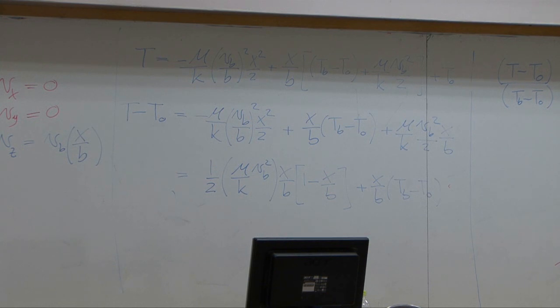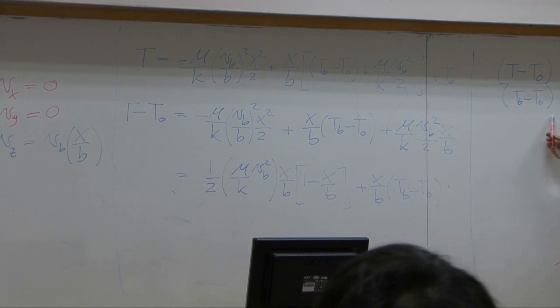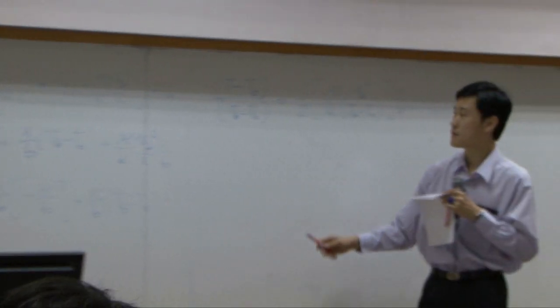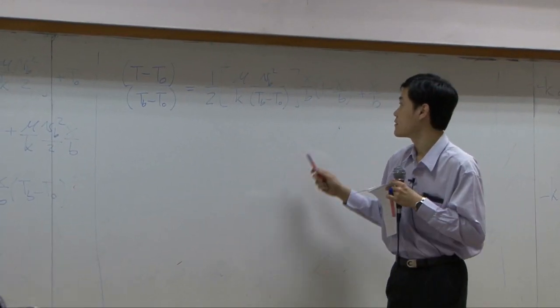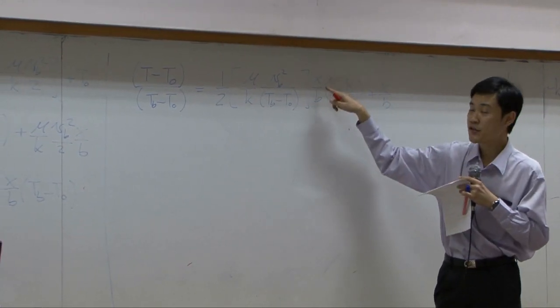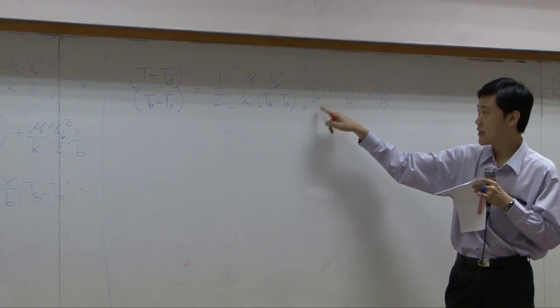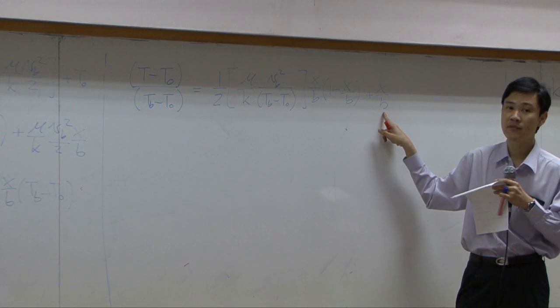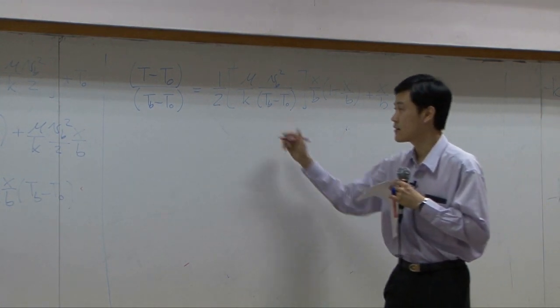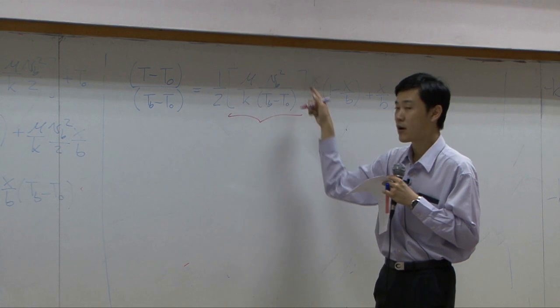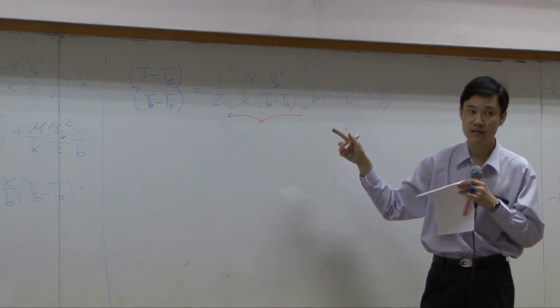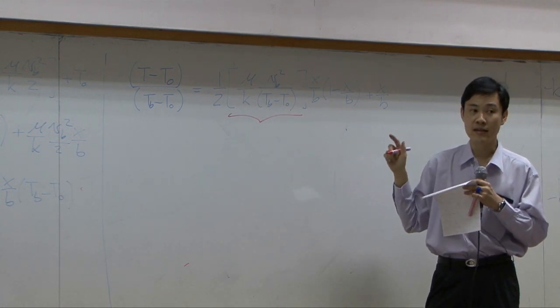Alright, now the term on the left has no unit, it is dimensionless. The ratio x over b would be dimensionless as well, so this term, that term, and that term has no unit. It means that the whole term in this parenthesis here, or in this bracket, supposed to be dimensionless as well.